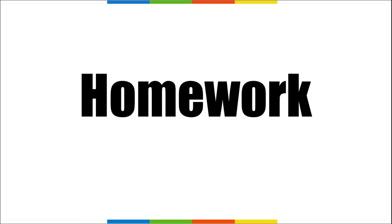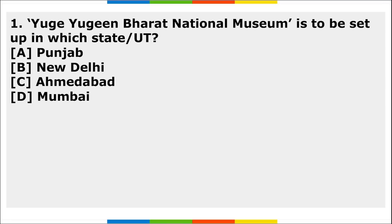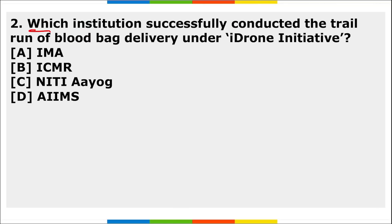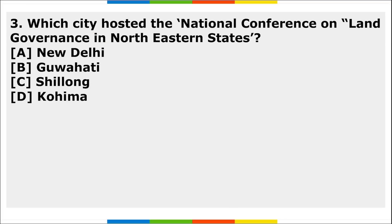Now for your homework: First, the Yug Yugeen Bharat National Museum is said to come up in which state? Second, which institution successfully conducted the trial run of blood bag delivery under the i-Drone initiative? Third, which city hosted the national conference on land governance in Northeastern States? These are your three homework questions.